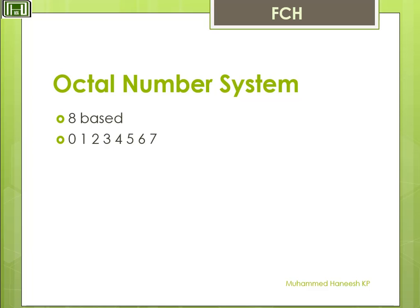Each position in an Octal number represents a power of the base 8. To the left of the Octal point, positional values from the rightmost digit are 8 raised to 0, 8 raised to 1, 8 raised to 2, 8 raised to 3, and so on. To the right of the Octal point, positional values from the leftmost digit are 8 raised to minus 1, 8 raised to minus 2, 8 raised to minus 3, and so on.